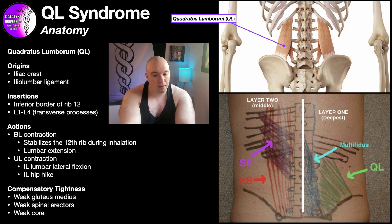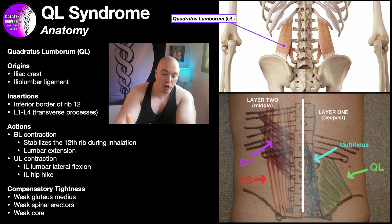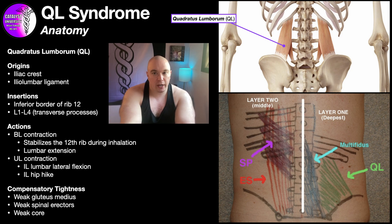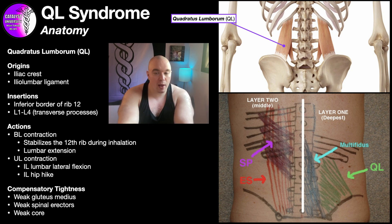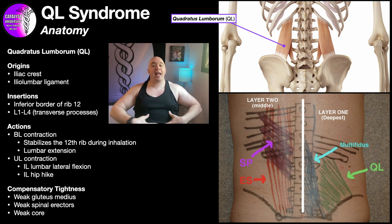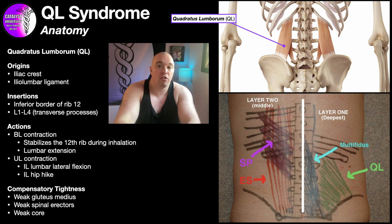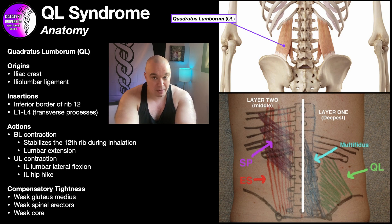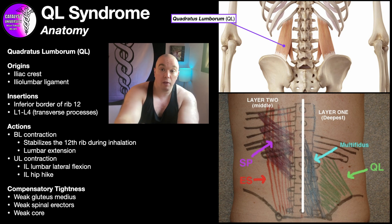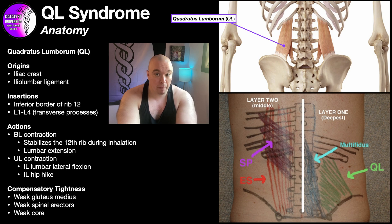Weak spinal erectors can also be a cause — if they're weak, lumbar extension is weak, particularly guarding against excessive lumbar flexion during movements like lifting from the ground, and the QLs could tighten as a result. There's also compensatory tightness due to a weak core — specifically the anterolateral core muscles, particularly the obliques. The internal and external obliques facilitate lumbar side bending and frontal plane stability of the spine, so if those muscles are weak, the QL may tighten up to compensate.